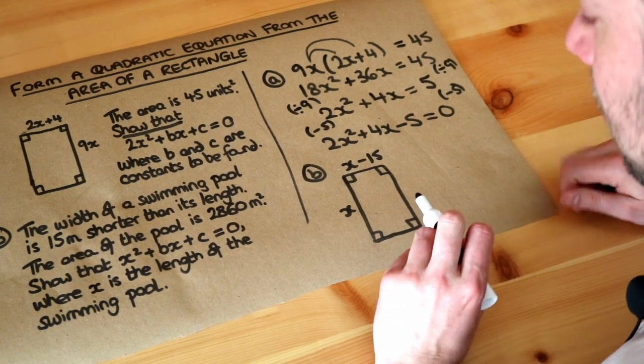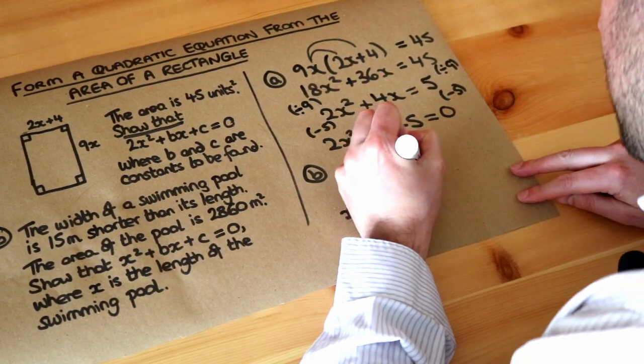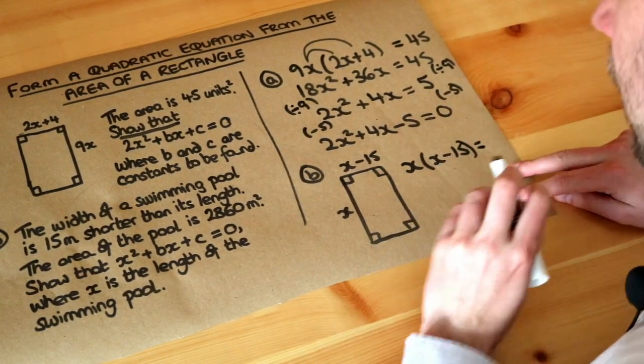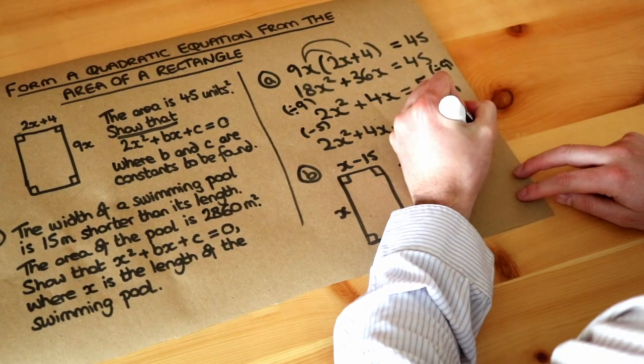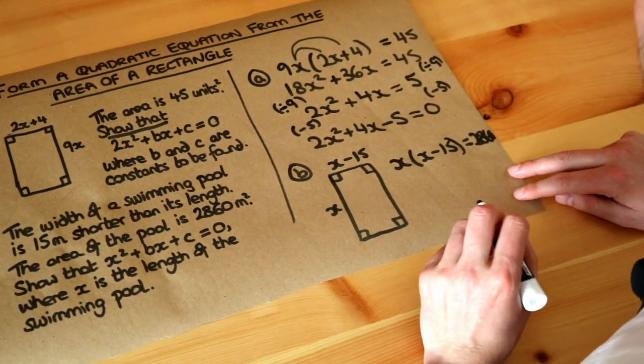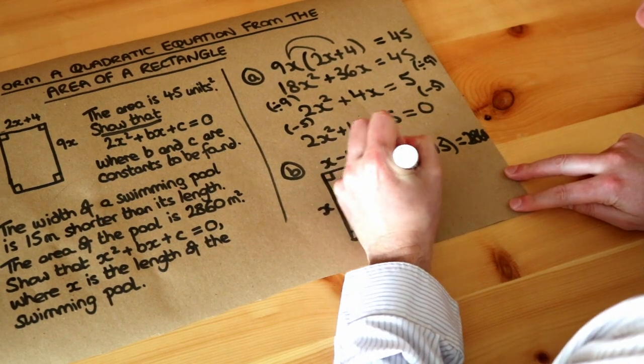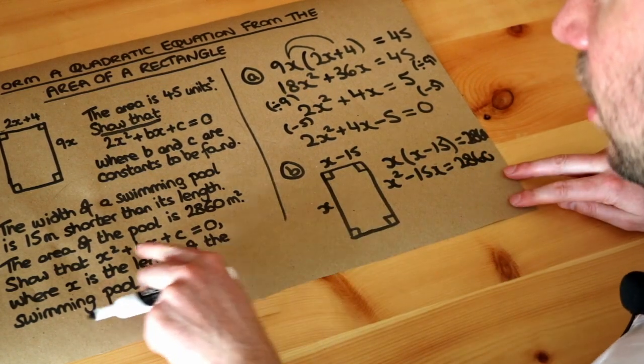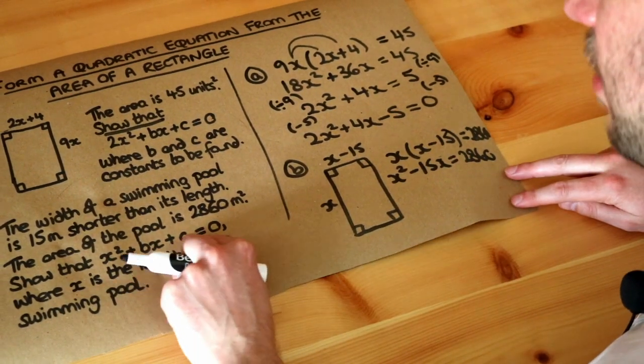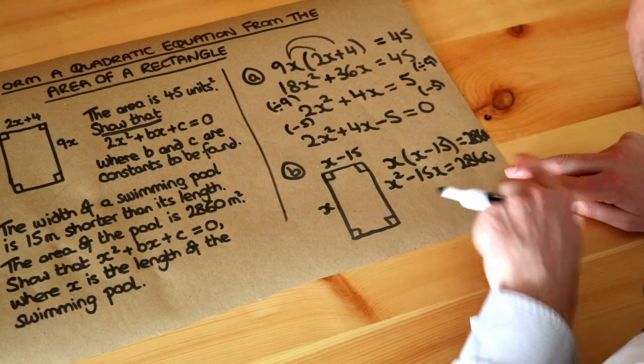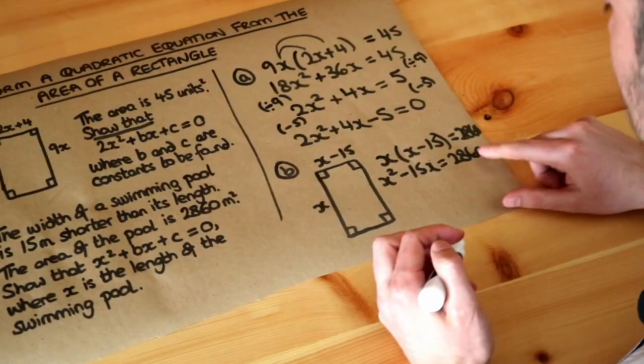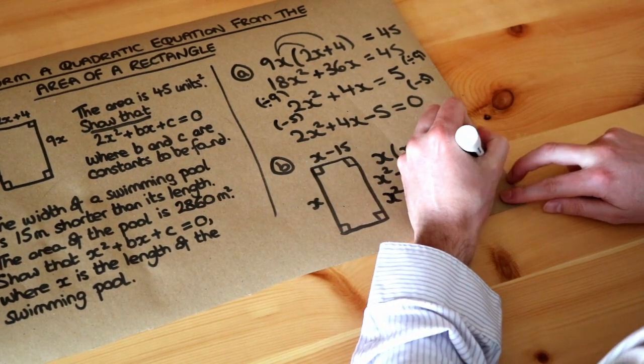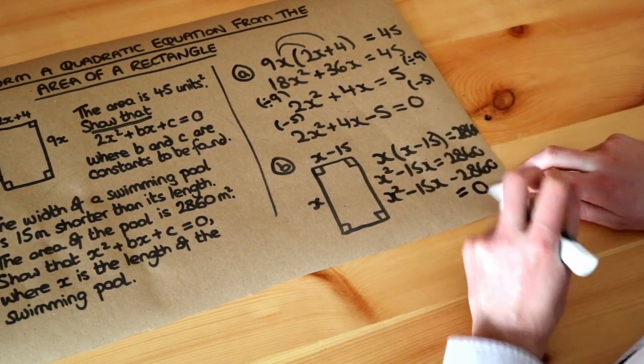And we're told that the area is 2860, so we do the same as we did before. Just length times width, so length times by width, I'm going to use brackets again, is equal to the area of the rectangle, which we're told is 2860. And then we can just expand out the brackets again, so we get x squared minus 15x equals 2860, and we want to put the equation in this form: x squared plus something x plus something equals zero. We need zero on the right hand side, so we're just going to subtract 2860 from both sides, and that will give us x squared minus 15x minus 2860 is equal to zero, and we are done.